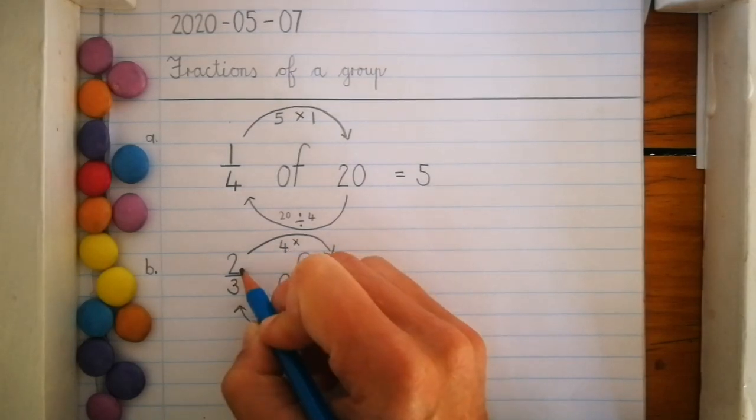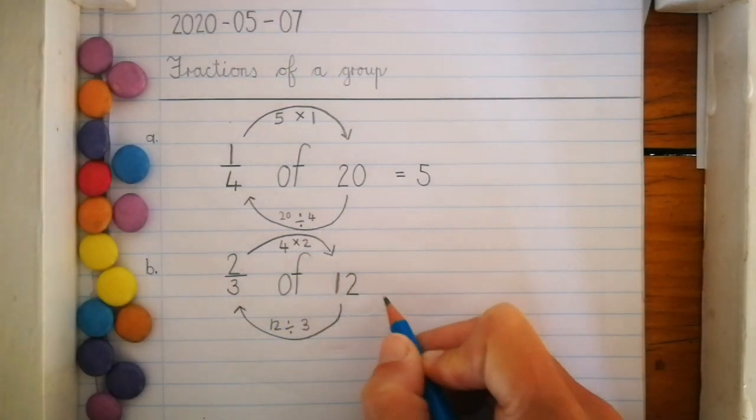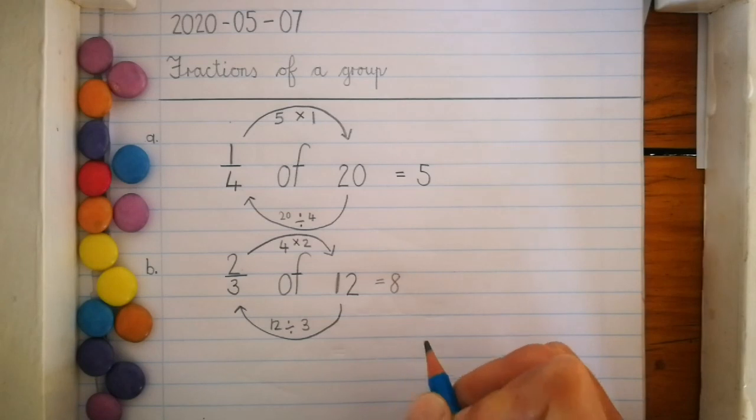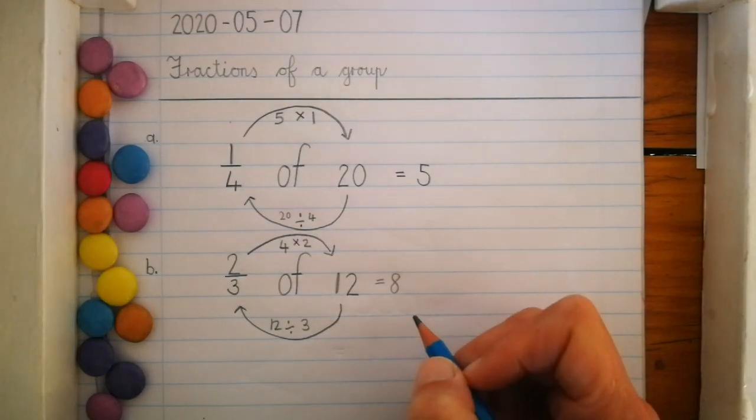4 times 2 equals 8. And that's how you work out all fraction problems.